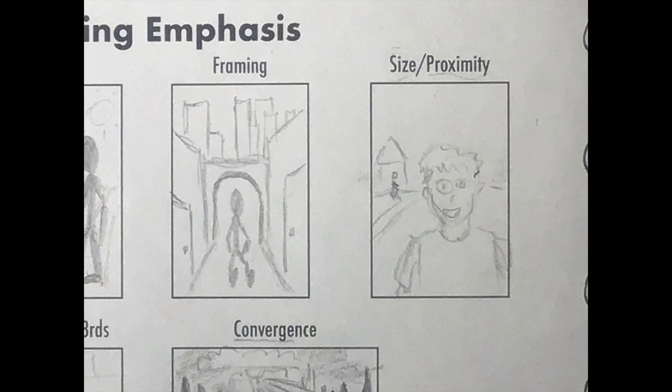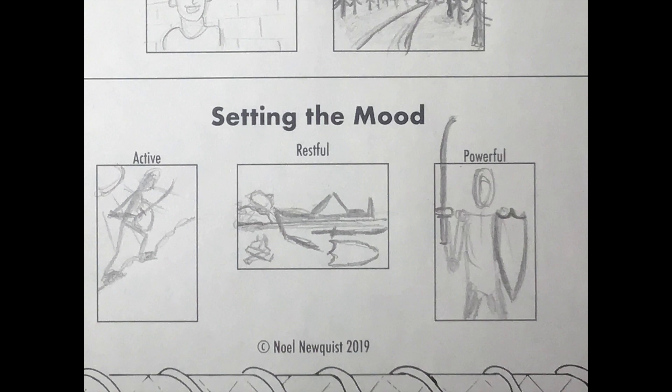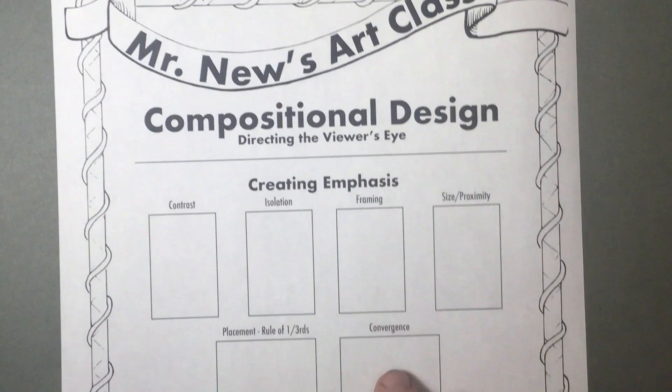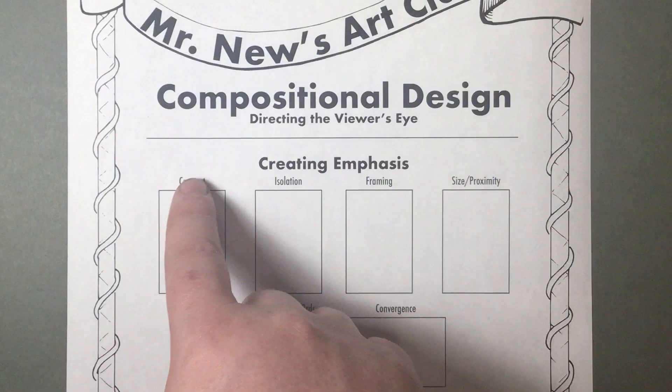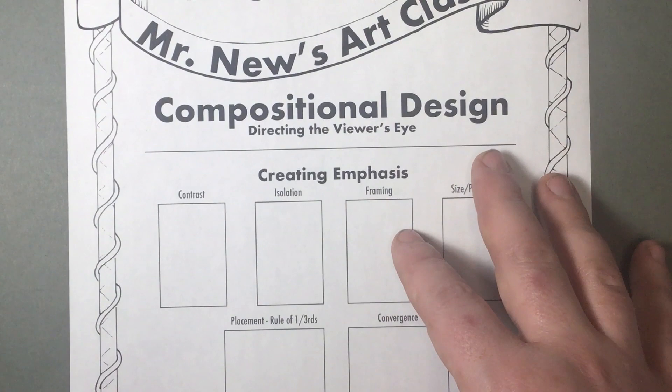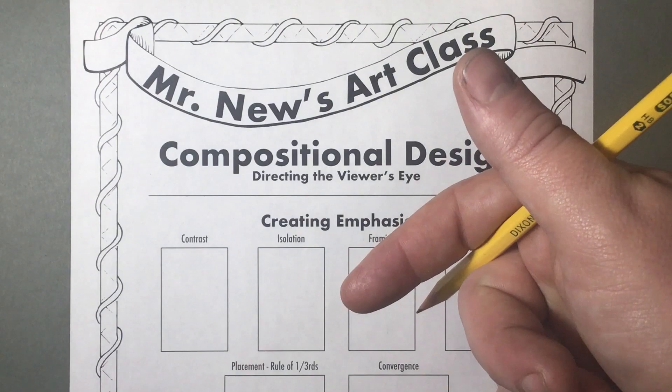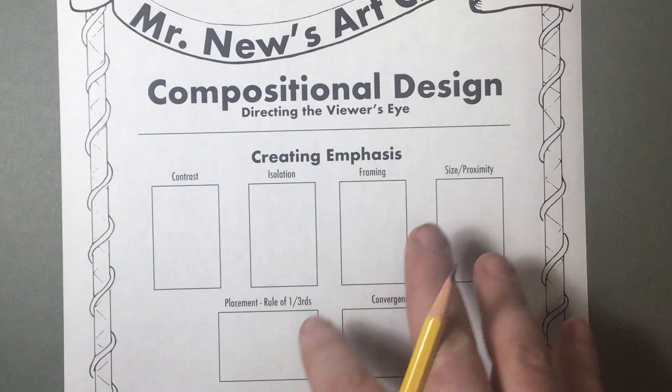It's all about how you direct the viewer's eye throughout your image. We're going to talk about creating emphasis, how we can set the mood, and how we can use each of these different methods of helping the viewer see what's important in your artwork. If you want to follow along on this sheet, you can print it out from the link in the description below, or just draw some thumbnail sketches on any kind of paper.